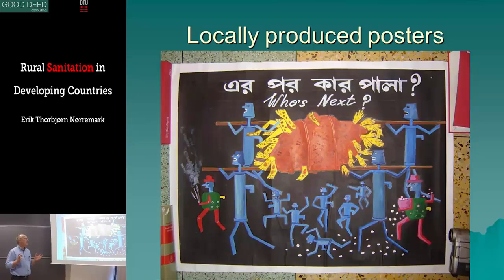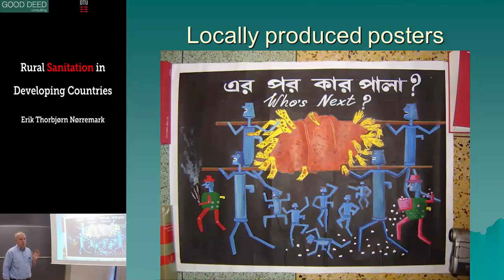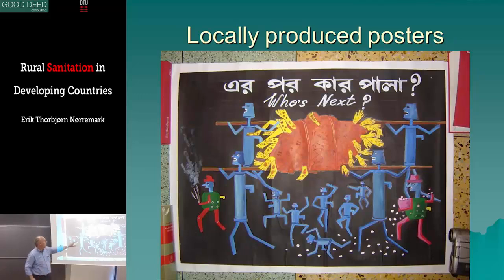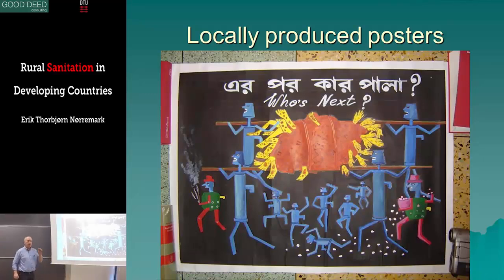You can also use locally produced posters — this is one from West Bengal, India, about the danger of arsenic in the water. It's a little difficult for us to understand, but for local Indians, they fully understand because all these things are connected to death. The blue hand pumps also represent death, and up here are all the dead people with arsenic damage to the skin. It might not work in Tanzania, but in India it worked very well — and it was locally produced.